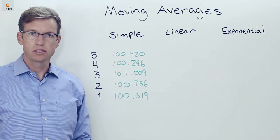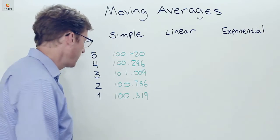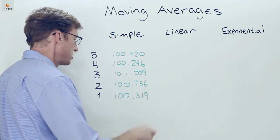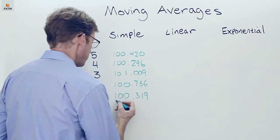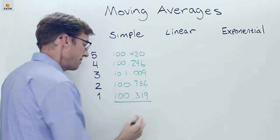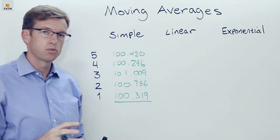So let's talk about how these are actually calculated. Now with a simple moving average, it really is quite simple. It's just the arithmetic mean. So if we were to take, for example, a five period moving average to keep this really simple...